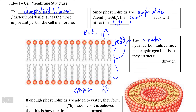Conversely, the non-polar hydrocarbon tails, because they are non-polar, cannot form hydrogen bonds with water. So instead, they form dispersion force attractions, which are the only intermolecular forces that non-polar molecules can form. And they simply do this with each other, because they cannot form hydrogen bonds with water.